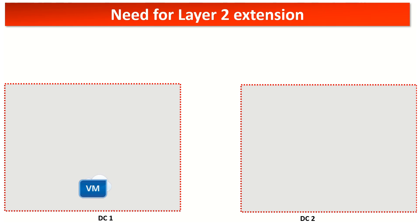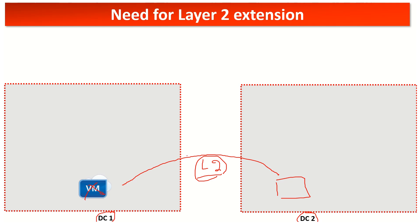We start with the need for a Layer 2 extension. Let's say we have two data centers — Data Center 1 and Data Center 2. As part of the Layer 2 requirement, we have a vMotion which needs to be carried out, where a VM would be destroyed and a corresponding one implemented in the other data center. For that to happen, the underlying infrastructure must allow the Layer 2 extension. However, existing solutions are not scalable enough, and that is where key features of VXLAN and OTV allow that scalable Layer 2 extension to happen.